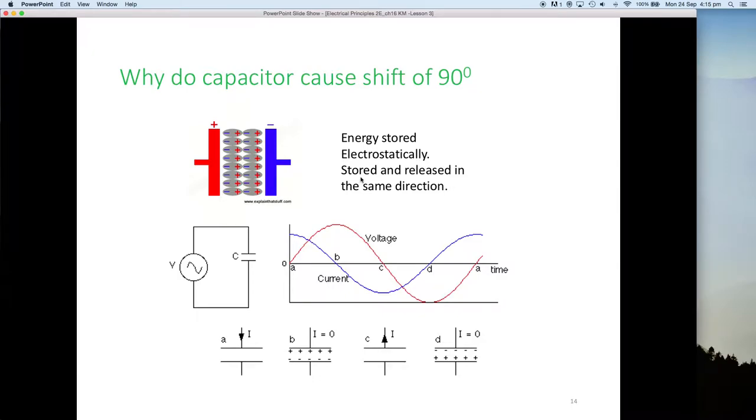So the energy is stored electrostatically, the stored energy gets stored and released, but it gets stored and released back in the same direction. That's why you get this additive effect of the current. The voltage or the current that was stored in the previous cycle is being fed back in, in this cycle, causing a 90 degree shift.